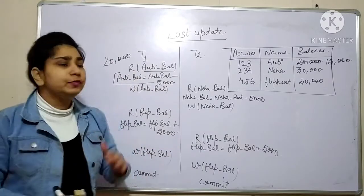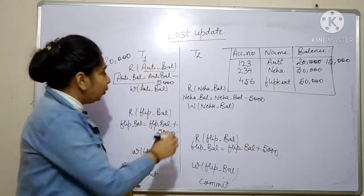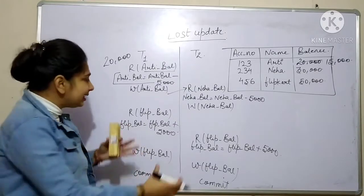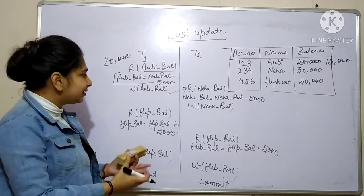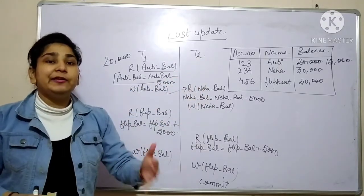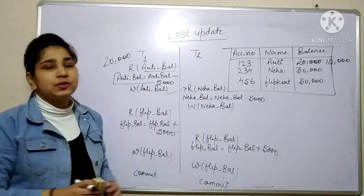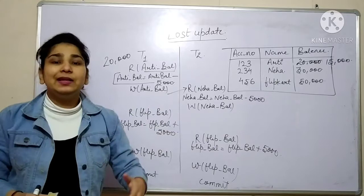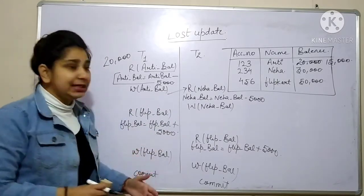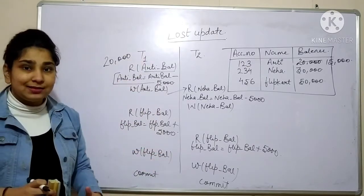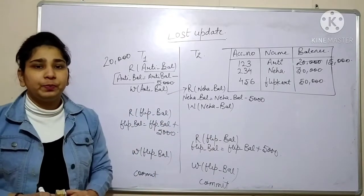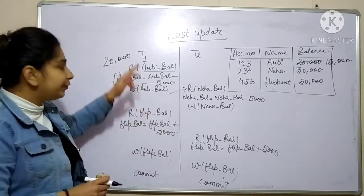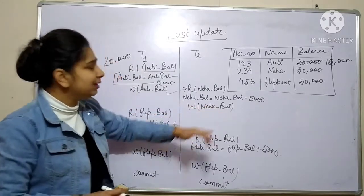We have executed some instructions of T1 and are now moving to T2. In this parallel mode of execution, T2 gets a first-time response much faster. If we had to execute both transactions in serial mode, we would run all instructions of T1 first and then move to T2. But in parallel mode, after just three instructions of T1, we switch to T2.